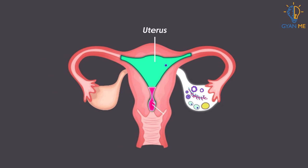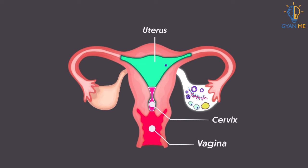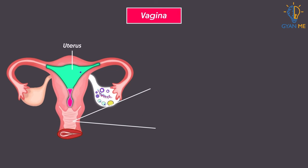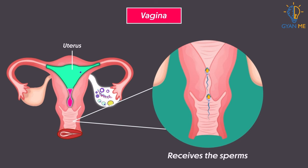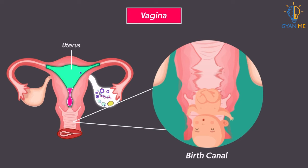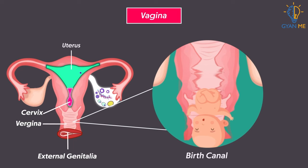The narrower part of the uterus is called the cervix, which leads into the vagina. The uterus narrows down into a hollow muscular tube called vagina, which connects the cervix and external genitalia in females. The vagina receives sperms during coitus or sexual intercourse and acts as a birth canal during childbirth. The birth canal also includes other organs — the canal formed by the cervix, vagina, and external genitalia through which the fetus passes during birth.